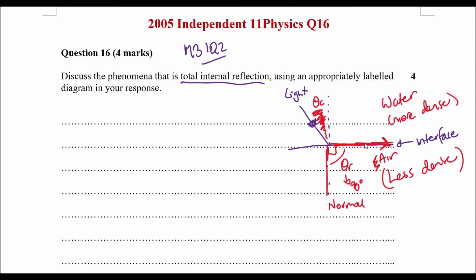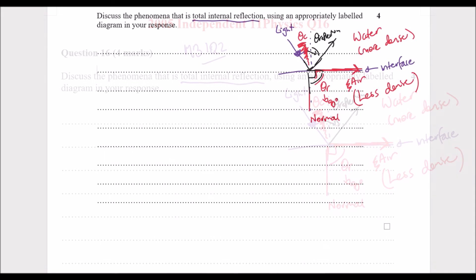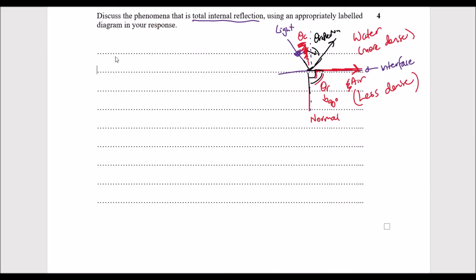Where light, instead of being refracted between two interfaces, it actually bends, or reflects, back out, and that angle would be the same as your critical angle. So let's try and explain how total internal reflection occurs.